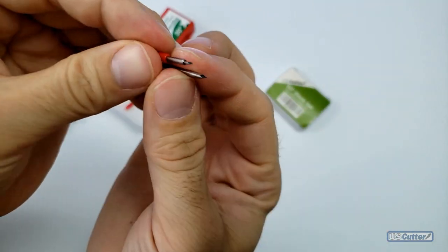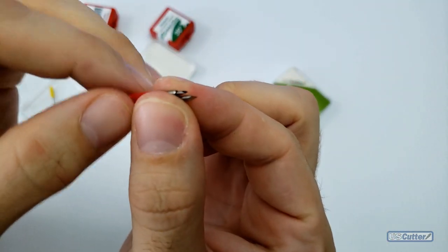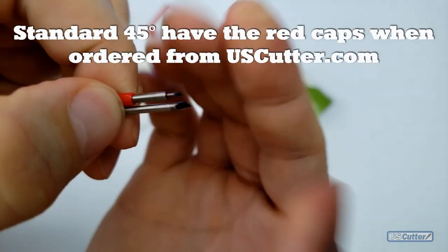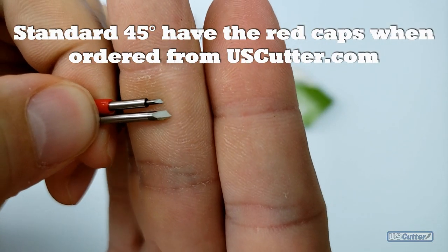Your 45 degree blade is your general and all-purpose blade. If you're mainly doing adhesive vinyl or HTV, its angle is great for cutting things up to 8mm thick.